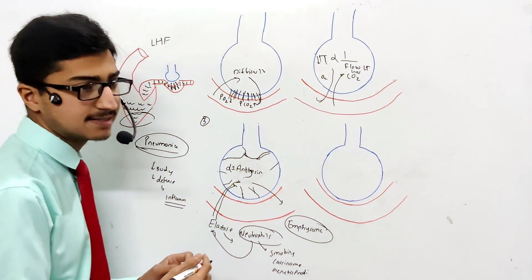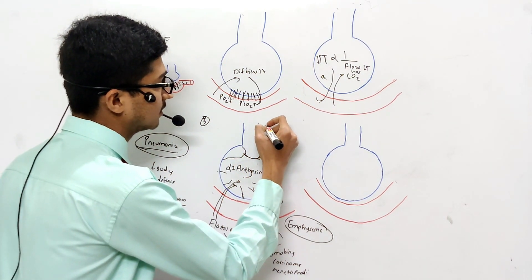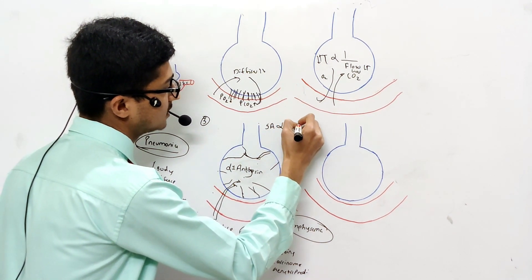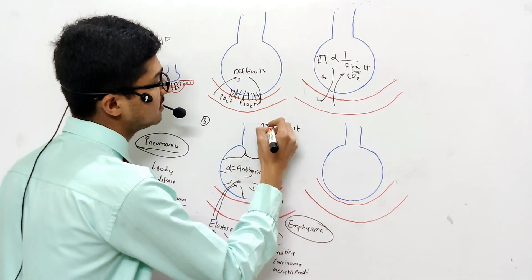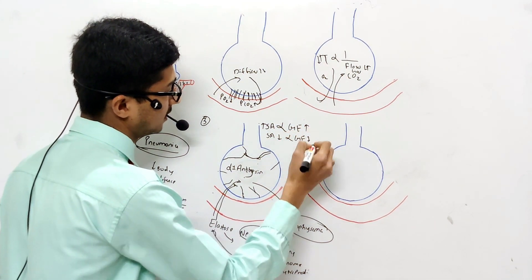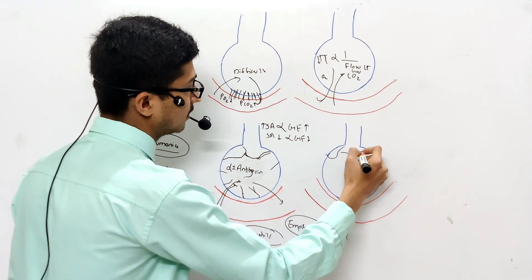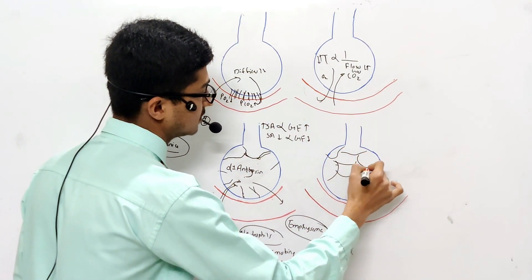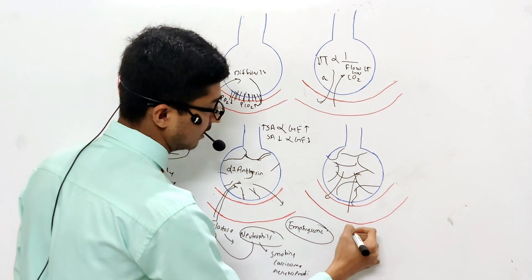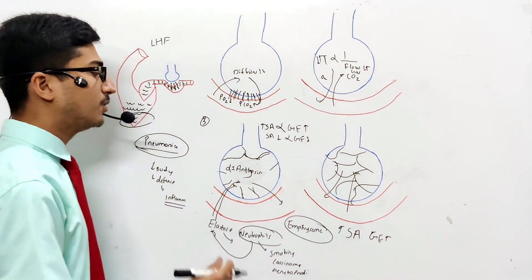In emphysema, the elastic fibers degenerate and the surface area decreases, so gaseous exchange also decreases. Surface area is directly proportional to gaseous exchange — if the surface area increases, gaseous exchange increases; if surface area decreases, gaseous exchange decreases. Similarly, when the alveoli have highly convoluted elastic fibers, the surface area is more and the exchange of gases is easier.